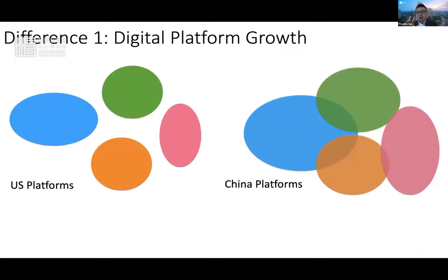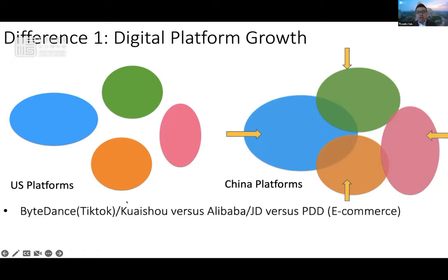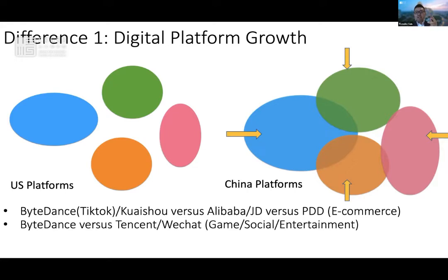Let me elaborate the first key difference. I would like to summarize it using this figure. While I was working in Silicon Valley, it was very interesting that there is very little head-to-head competition on core interests between the tech giants. Amazon does not directly compete with Facebook, and Google does not directly compete with Netflix. If you pick any two of the top 10 tech firms in the US, they do not directly compete head-to-head on core interests. But in China, it's very interesting that there is very strong competition between all the top giants. ByteDance and Kuaishou, the short video platforms, compete heavily with Alibaba and JD.com on e-commerce, which is the core interest for Alibaba and JD. ByteDance versus Tencent — they compete strongly on gaming, social, and entertainment.